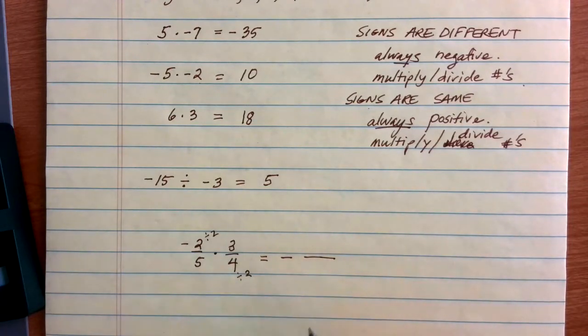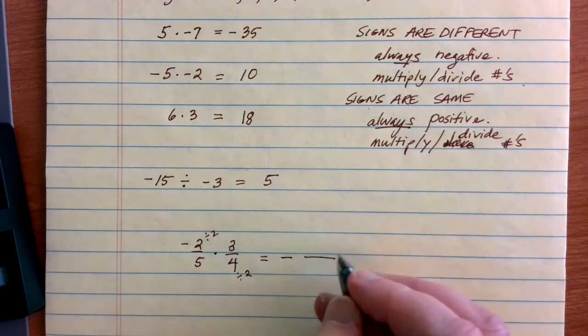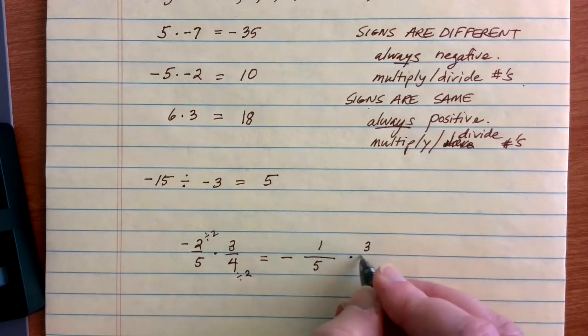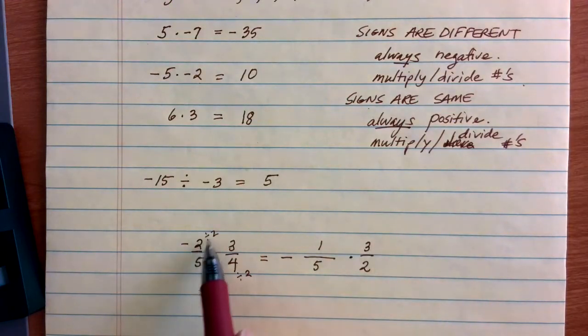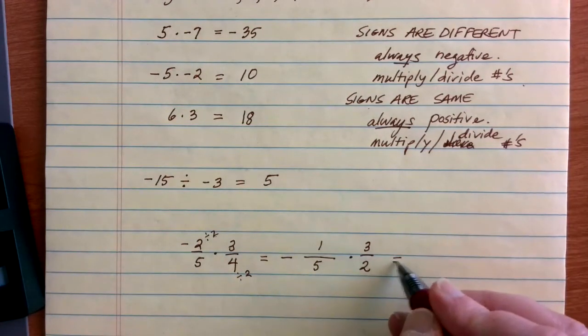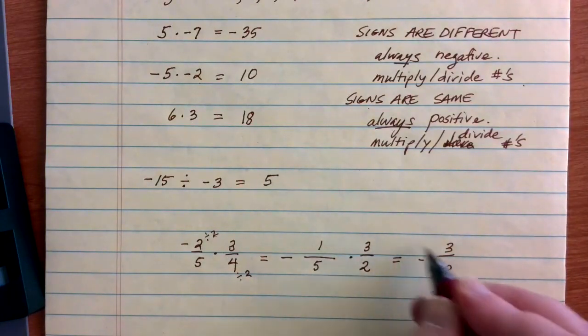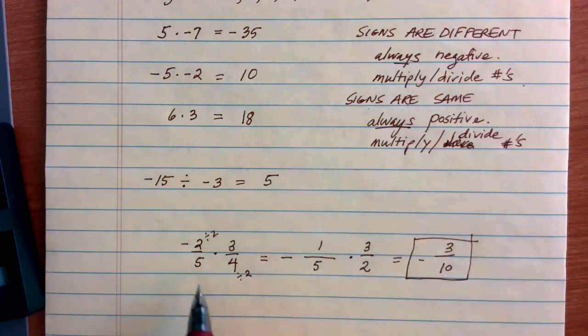And I get negative 1 fifth times 3 halves, right? 2 divided by 2 gives me a 1, 4 divided by 2 gives me a 2 in the bottom there. And then I can multiply straight across the top. Negative 1 times 3 is 3, 5 times 2 is 10, so negative 3 tenths is my solution for negative 2 fifths times 3 fourths.